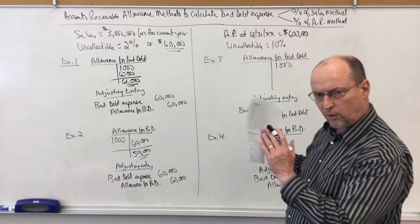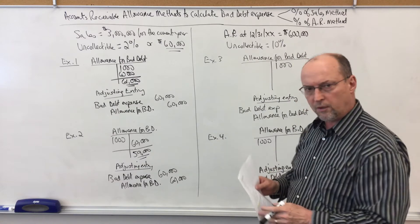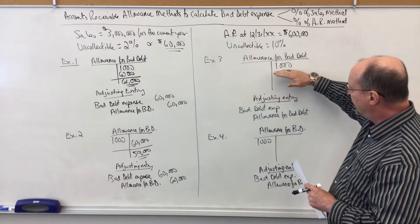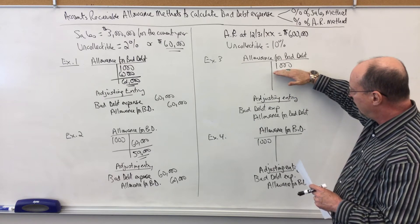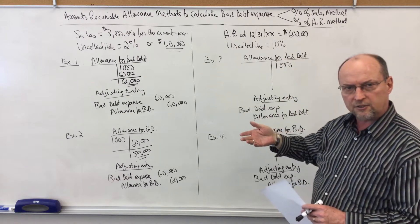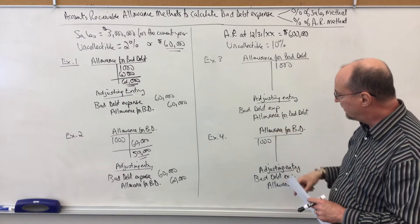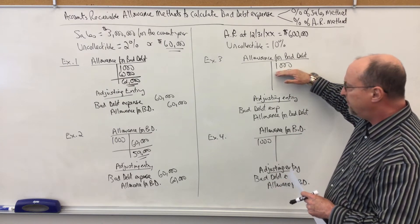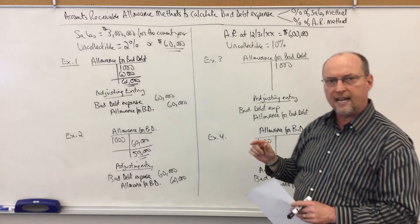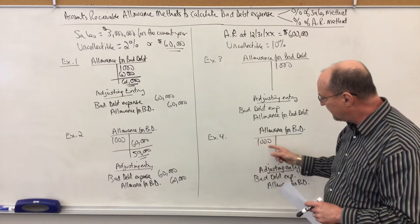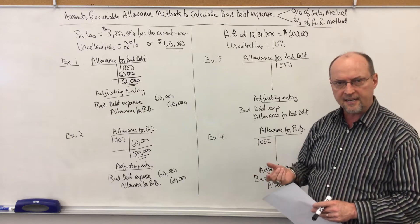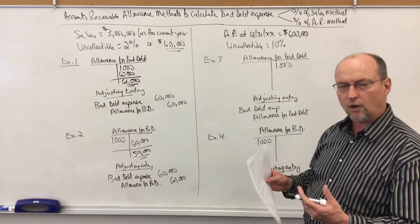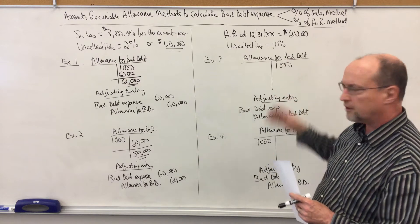The sales method focuses more on the income statement; the AR method focuses more on the balance sheet. We have two separate examples. In example three, we'll assume the allowance has a $1,000 credit balance — a remaining leftover balance before this year's adjustment — and in example four we assume it has a debit balance. A credit balance means we slightly overestimated bad debt last year; a debit balance means we slightly underestimated. We assume this $1,000 balance is immaterial. If it were large, we'd need to refine our uncollectible percentages.